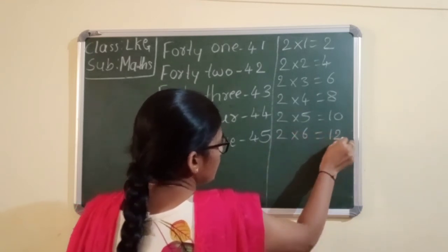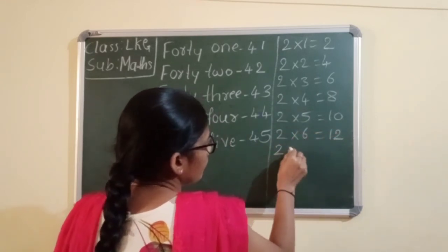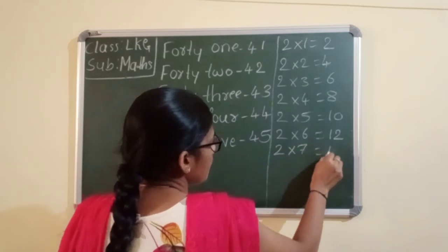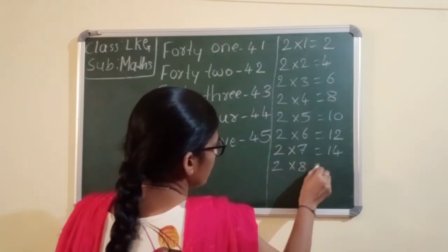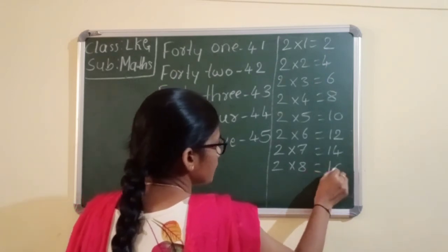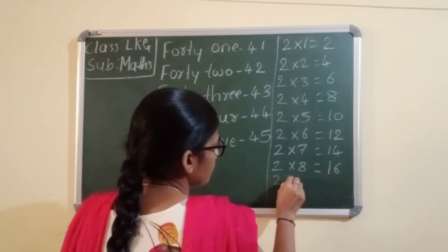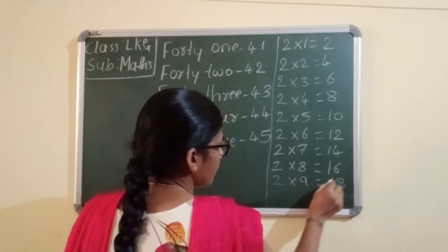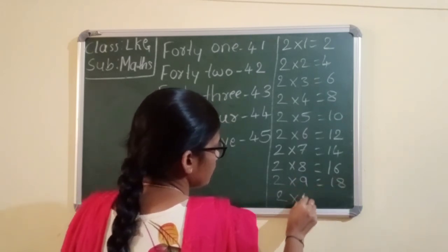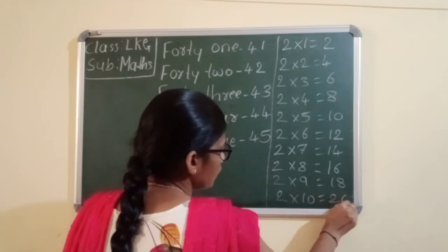Two sixes are twelve. Two sevens are fourteen. Two eights are sixteen. Two nines are eighteen. Two tens are twenty.